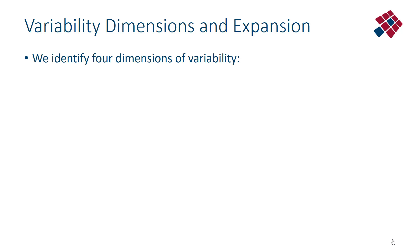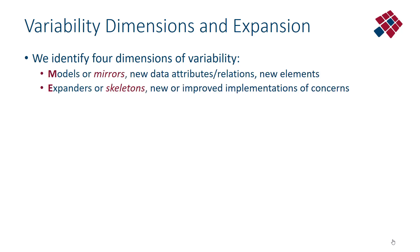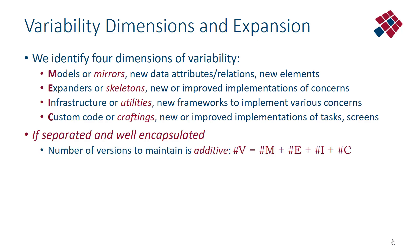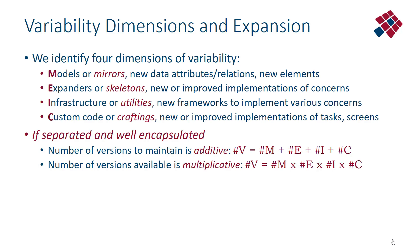Crucial here is that we have a number of dimensions of variability — a number of dimensions along which the software evolves — and that we have to separate them very cleanly. We have the models, we have the skeletons, the recurring structure, the utilities or infrastructure used for the cross-cutting concerns, and the custom code or craftings. It is absolutely crucial to separate and encapsulate these dimensions very well, because if we do, we get the ultimate benefits of modularity, enjoying the product of all the various versions and variants at our disposal by only having to carry the sum of the versions and variants of every dimension.